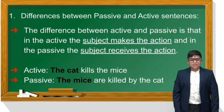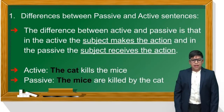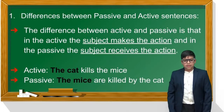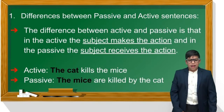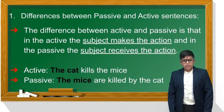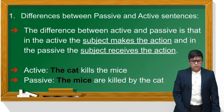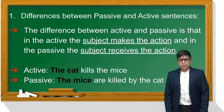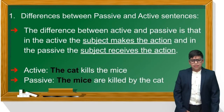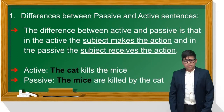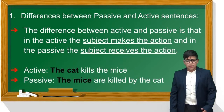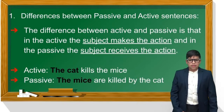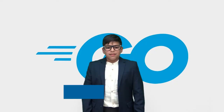We're going to start with the difference. The difference between active and passive is that in the active the subject makes the action, and in the passive the subject receives the action. For example, an active sentence: 'The cat kills the mice' — the cat makes the action. And the passive sentence is 'The mice are killed by the cat' — the mice receive the action.